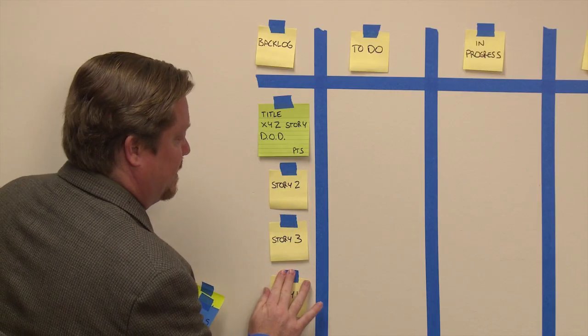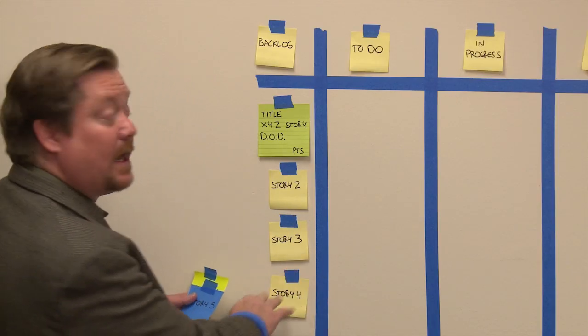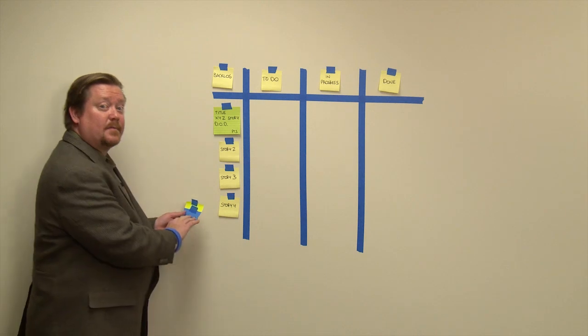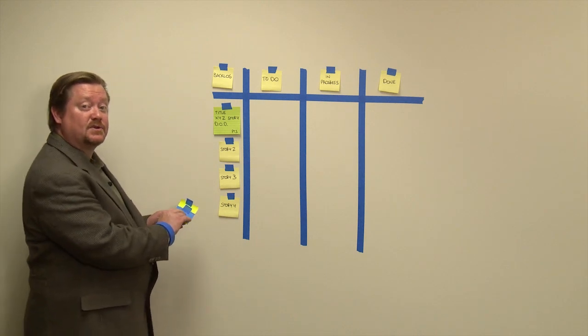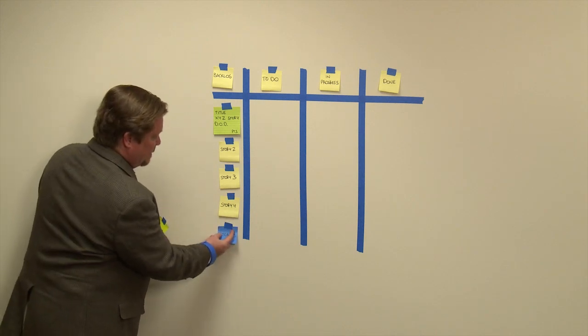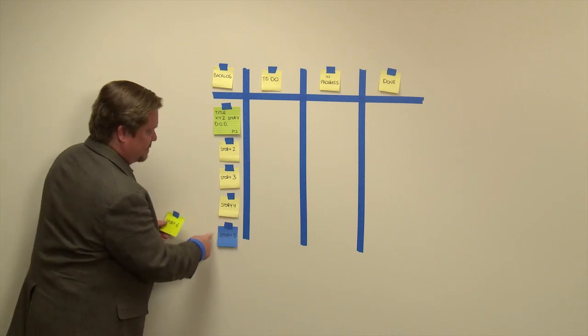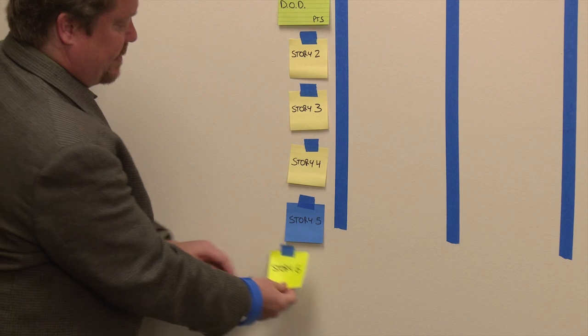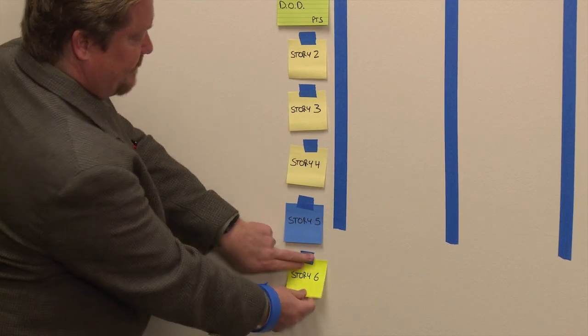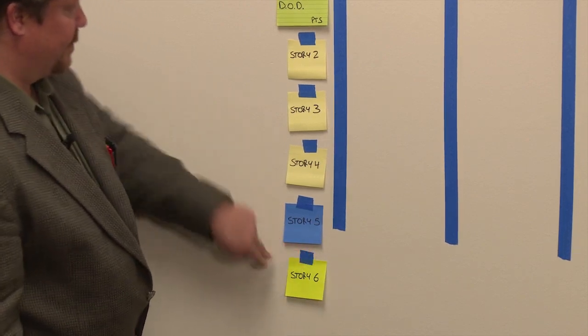You can even use different colored tickets to represent different types of stories. For example, this blue ticket might be a database story and this green ticket might be an infrastructure story.